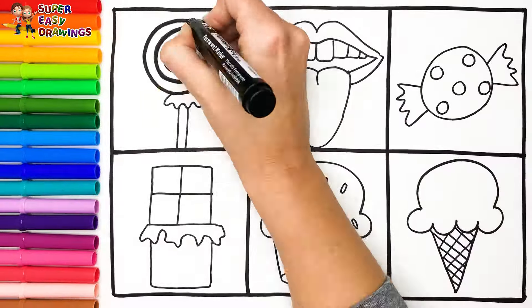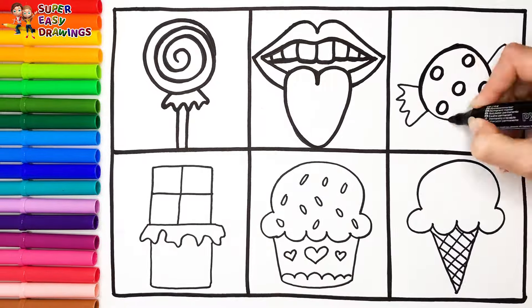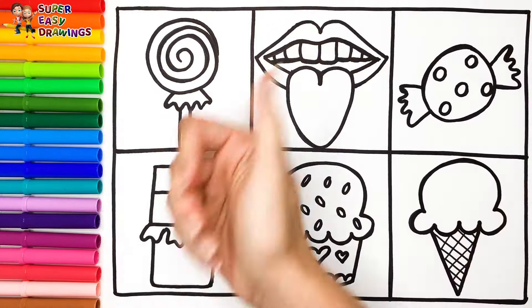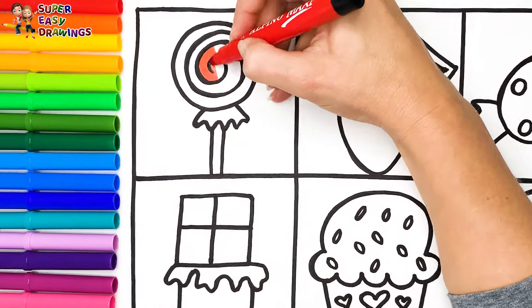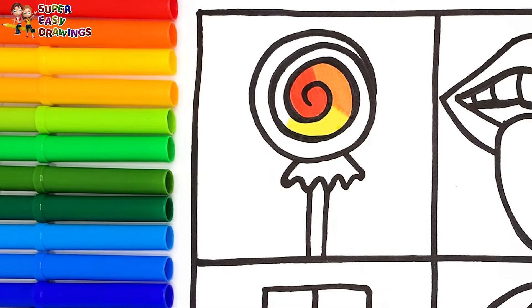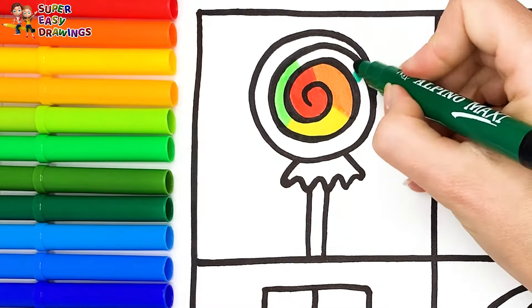Now I'm going to use this thick black marker to make this beautiful drawing more visible. Let's start coloring. I color the lollipop with rainbow colors. It's red, orange, yellow, light green, dark green.